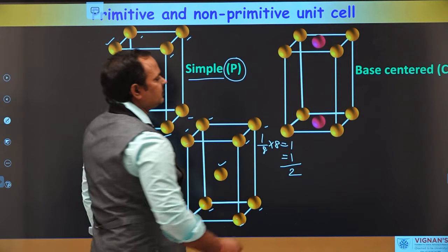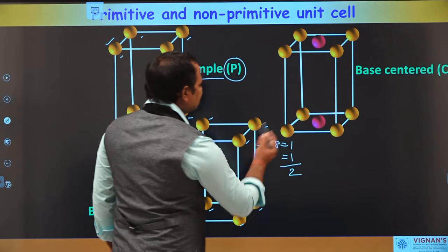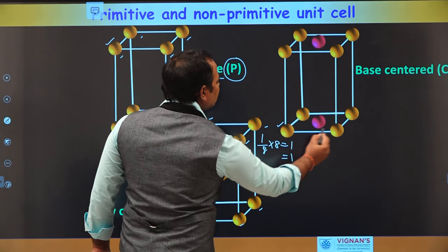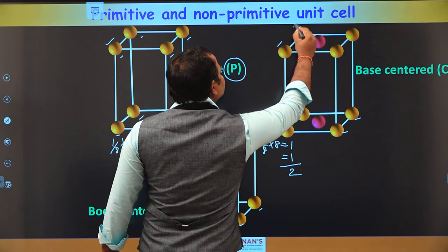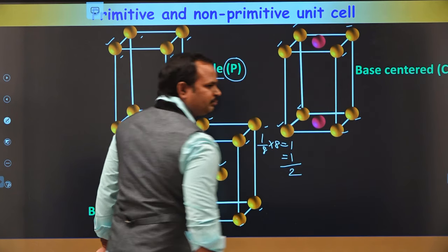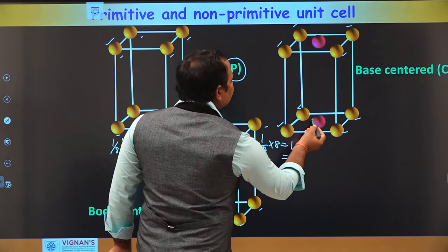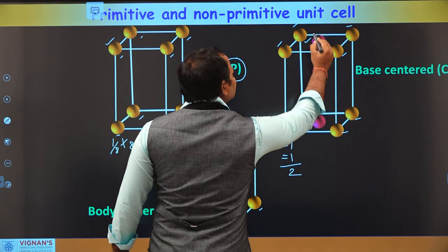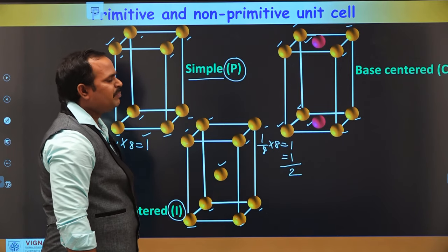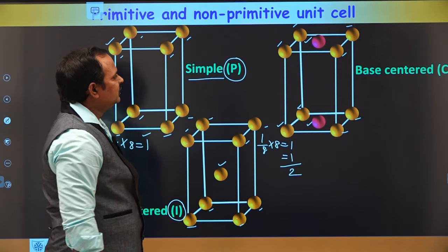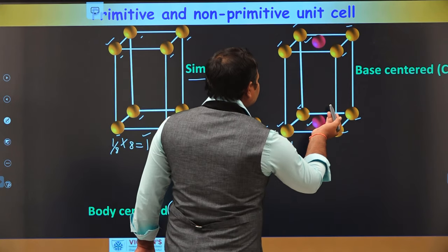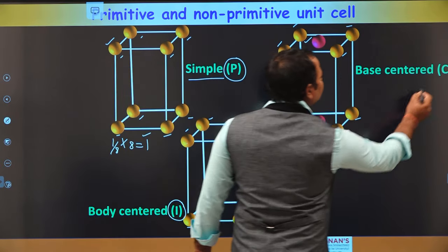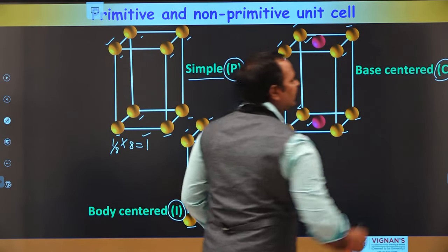This is a base-centered lattice. Similar to the primitive cell, we have 8 atoms at the corners, and there are 2 extra atoms on the top and bottom faces of the unit cell. The number of lattice points per unit cell is more than 1, so this is also a non-primitive unit cell, represented with the letter C.